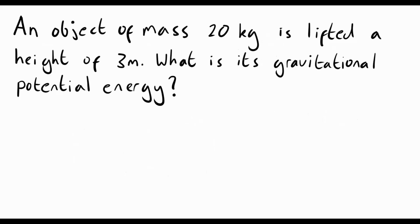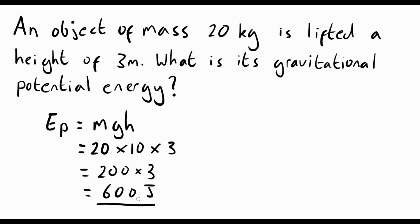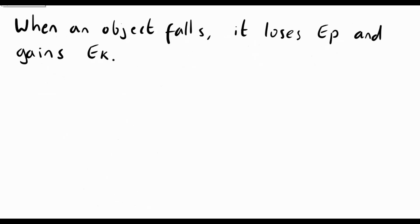Here's a simple question regarding gravitational potential energy: an object of mass 20 kilograms is lifted a height of 3 meters — what is its gravitational potential energy? Like before, we start by writing the equation: EP equals M G H. Putting in the numbers: mass is 20 kilograms, G is 10, and height is 3 meters. 20 times 10 is 200, times 3 equals 600 joules. So the object gained 600 joules of gravitational potential energy.